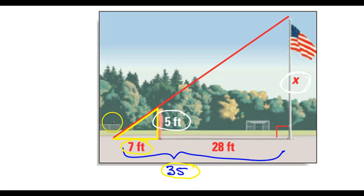I'm going to go ahead and go big over small. So that's going to be X over 5, and that should equal 35 over 7, the big side over the smaller side.